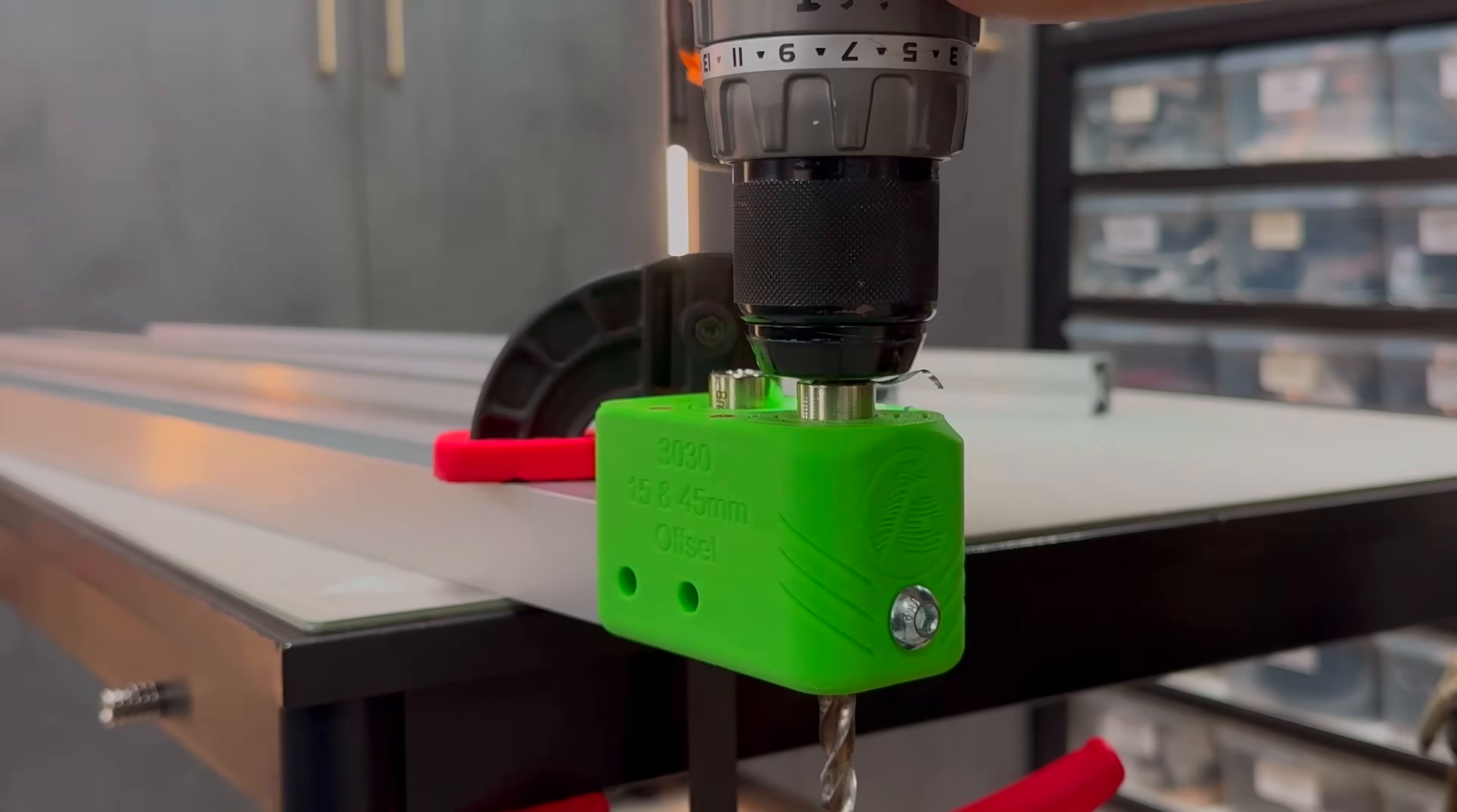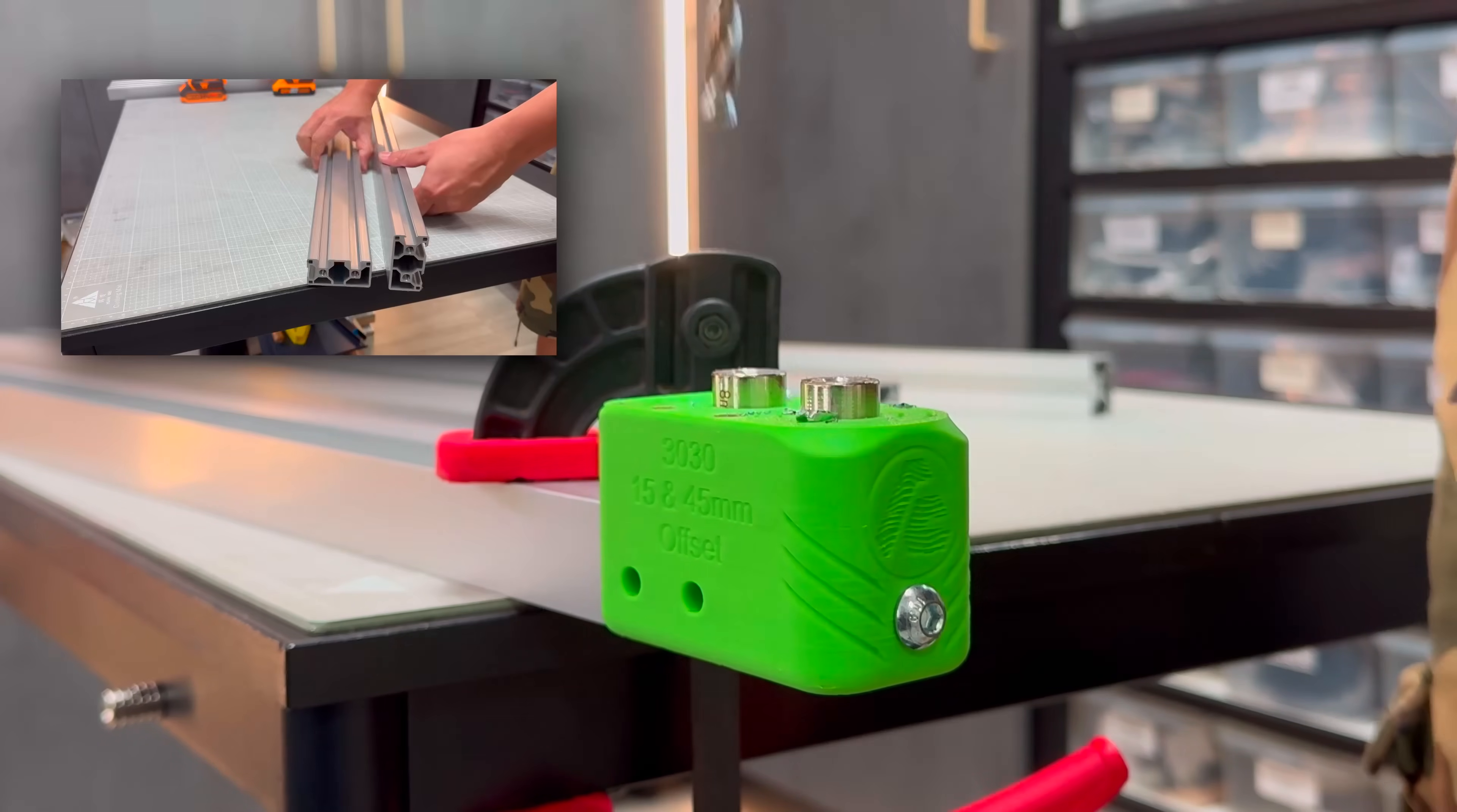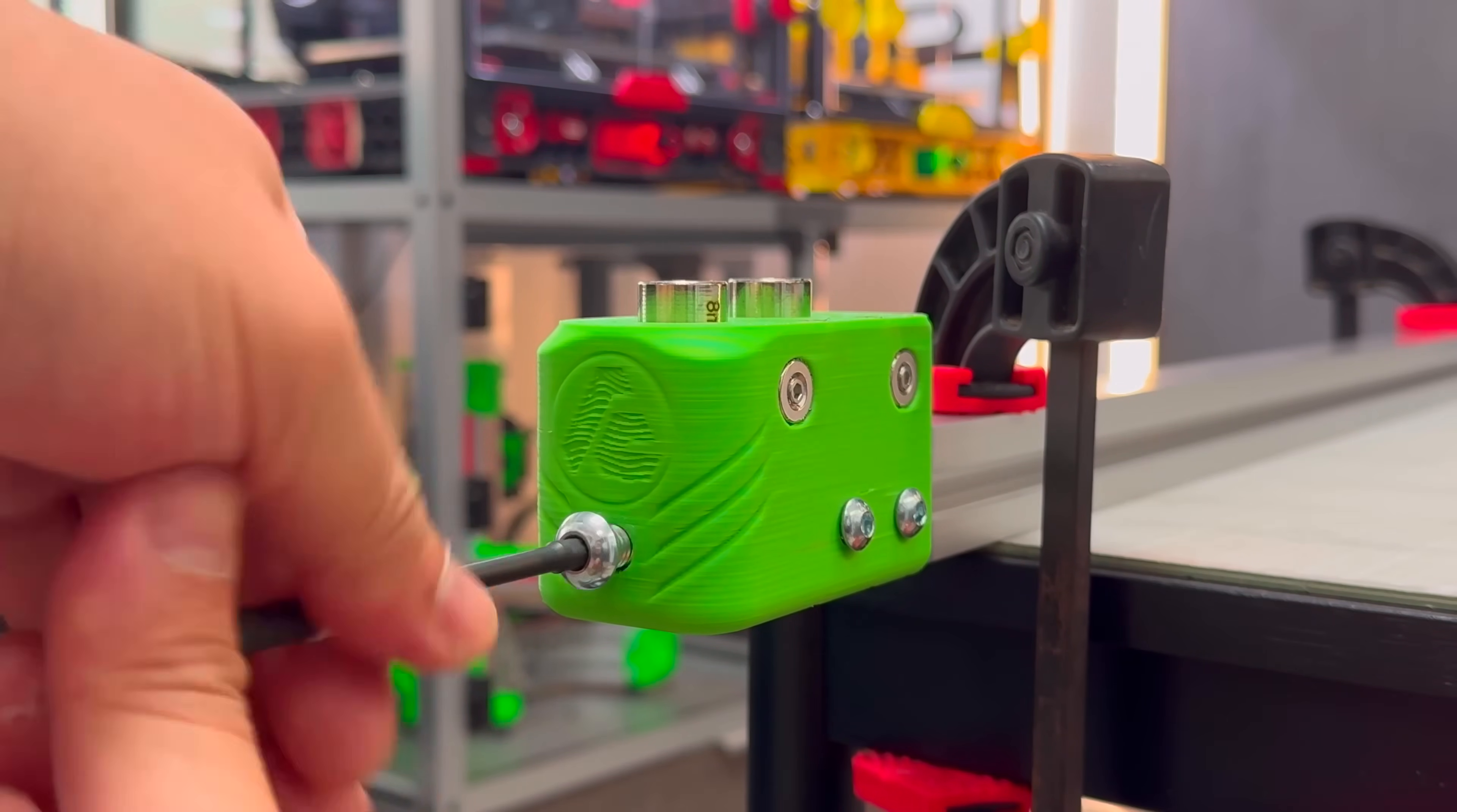We'll be using a couple of precision jigs to build this table. To prevent horizontal flexing, we're using 3060 aluminum profiles. These profiles don't have slots on some faces, which gives the frame a more professional finish.